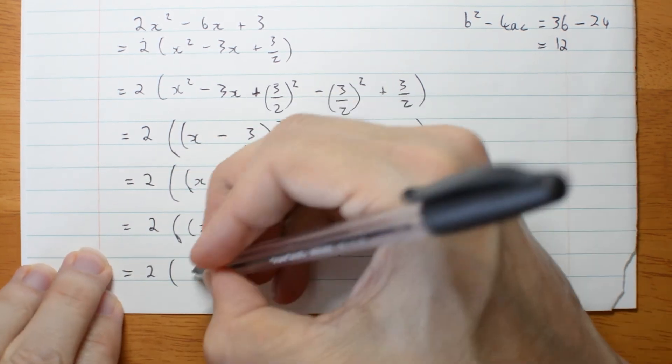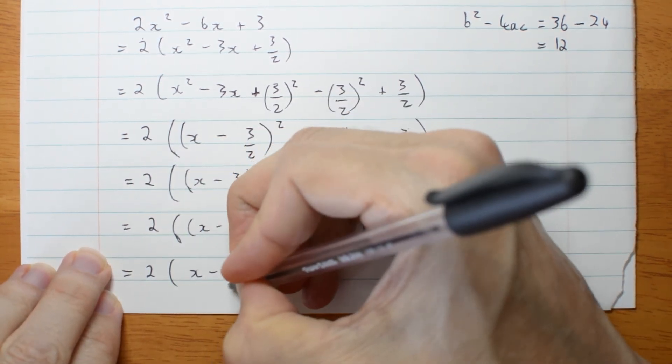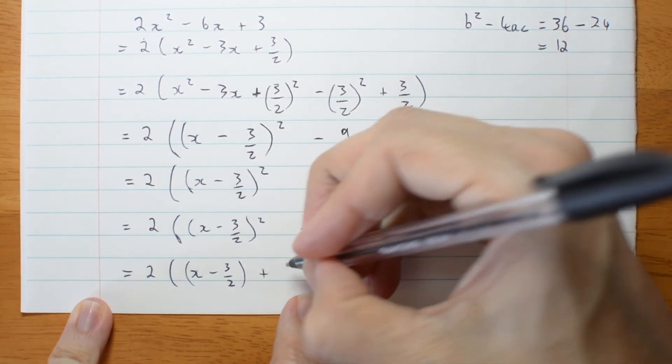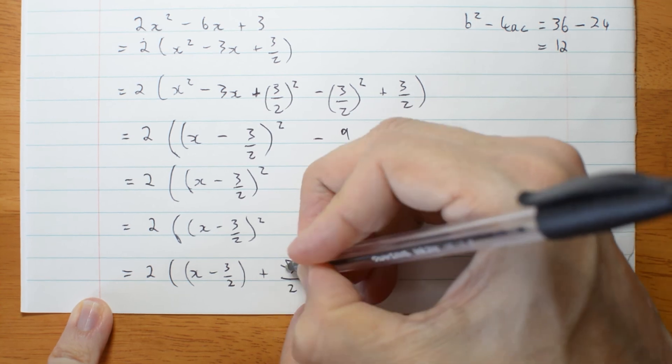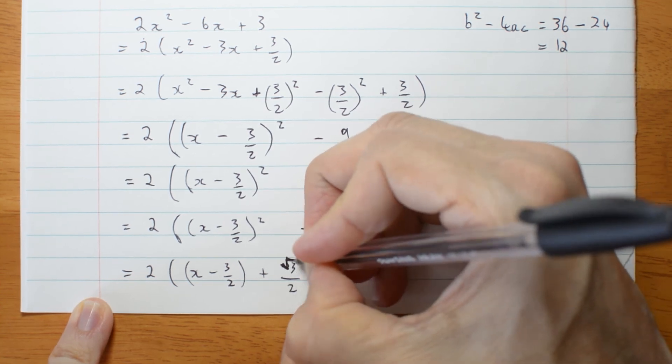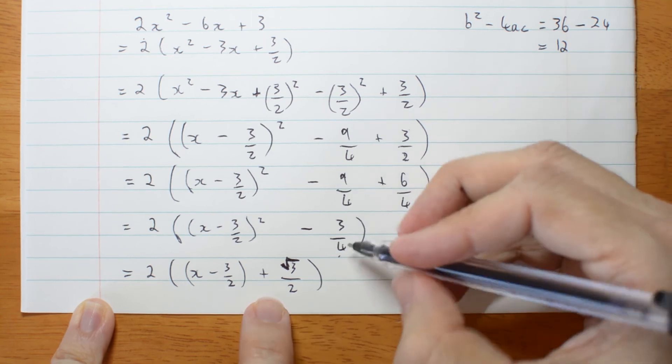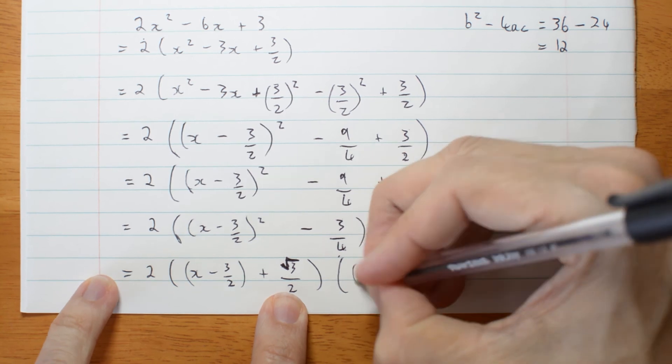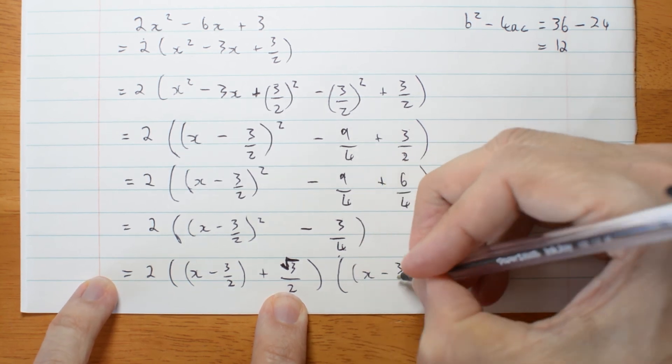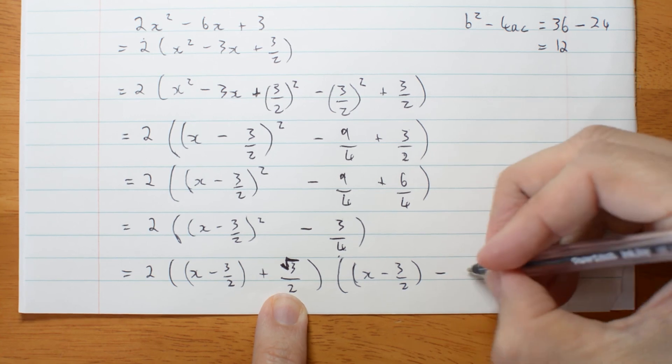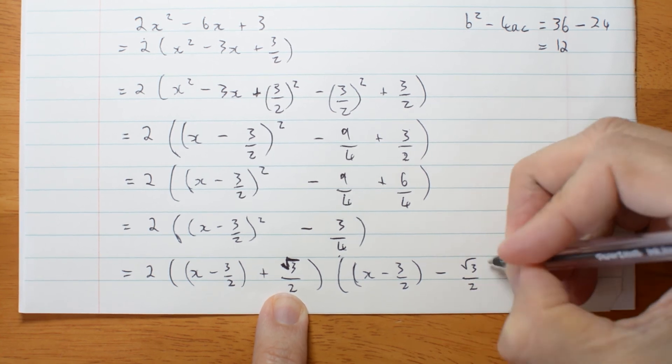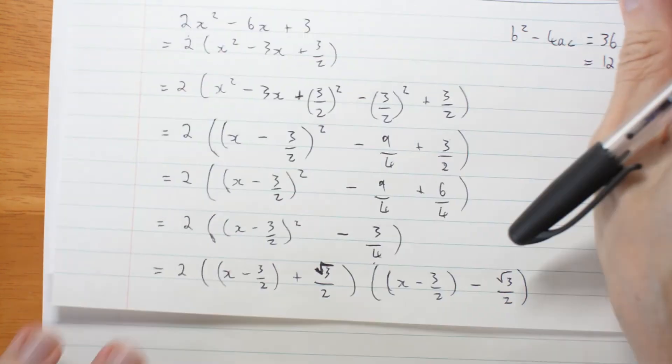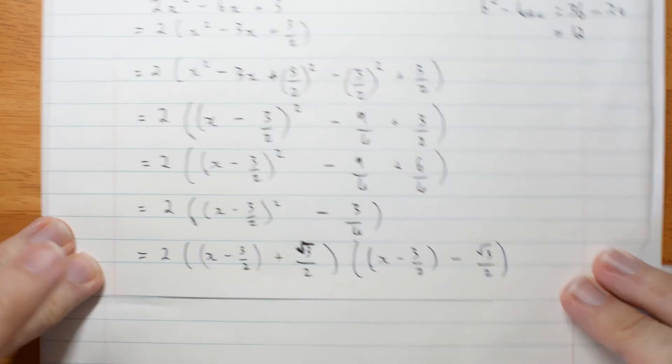So that's 2 times x minus 3 on 2 plus root 3 on 2. That was a very ugly square root sign. It's the square root of this, which is root 3 on 2. And then the other factor is x minus 3 on 2 minus root 3 on 2.